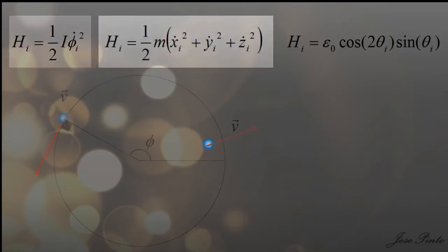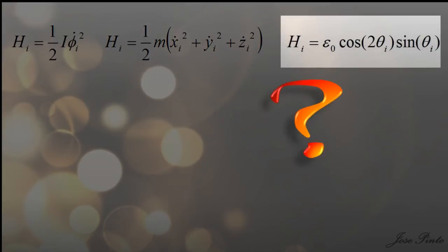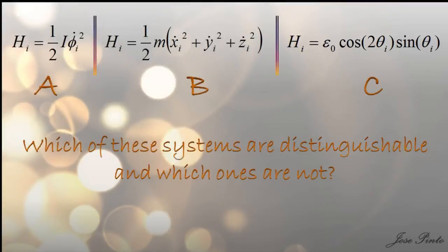The next one is just a particle free to move. No interactions between the particles. I think you can see that easily. And the next one, I just have no idea. I just made it up. And the question is, which of these systems are distinguishable and which ones are not?